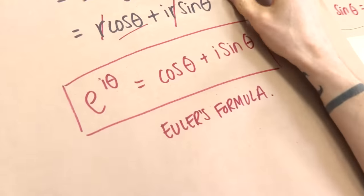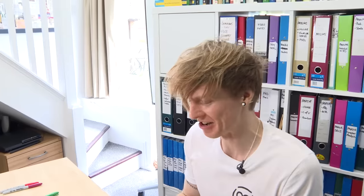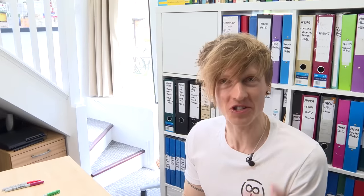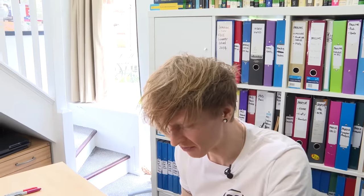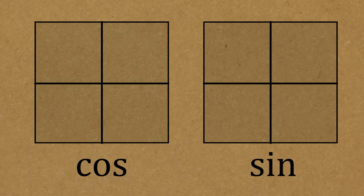Euler's formula is awesome. There are loads of really cool things we can do with it, and I'm going to show you three of my favorites. We've seen where it comes from — complex numbers, triangles, different things. Now we've got it, let's play around and see what we can figure out.